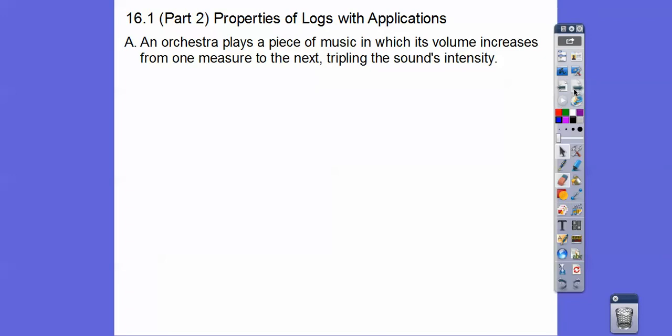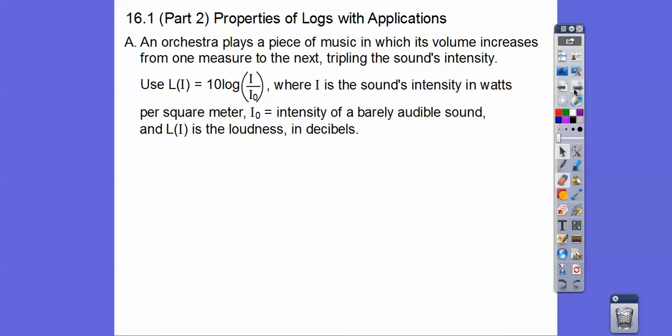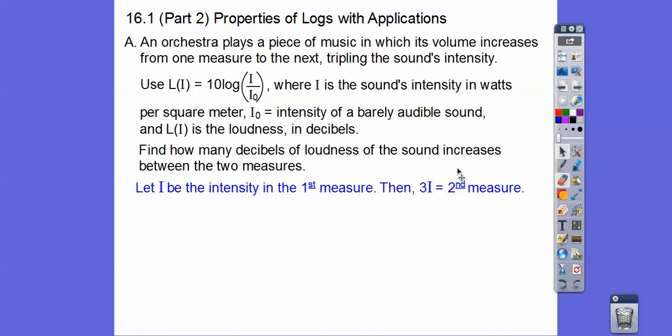An orchestra plays a piece of music in which its volume increases from one measure to the next, tripling the sound's intensity. We're going to use L sub i, which is our loudness function: L sub i equals 10 times the log of i over i sub zero, where i is the sound's intensity in watts per square meter and i sub zero is the intensity of a barely audible sound. L sub i is the loudness in decibels. Find how many decibels of loudness the sound increases between the two measures. It's tripling in sound's intensity, so we'll let i be the intensity of the first measure and 3i would be the second measure.